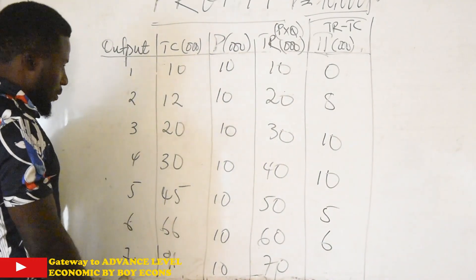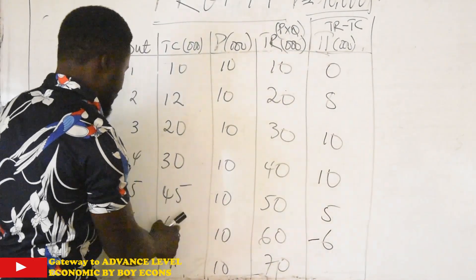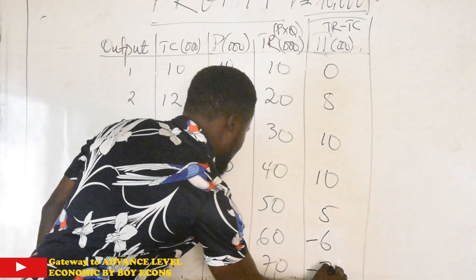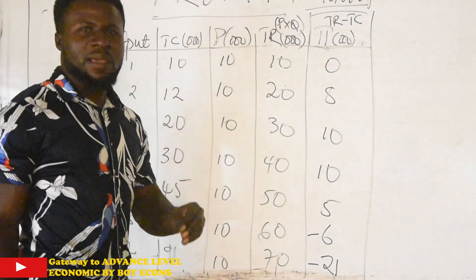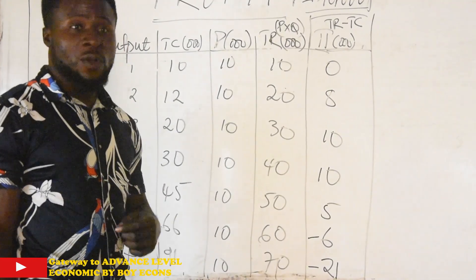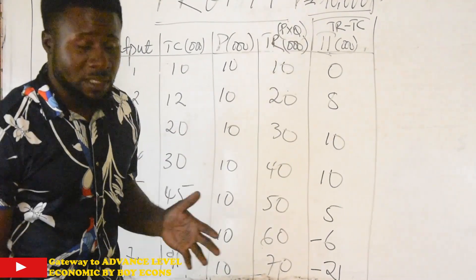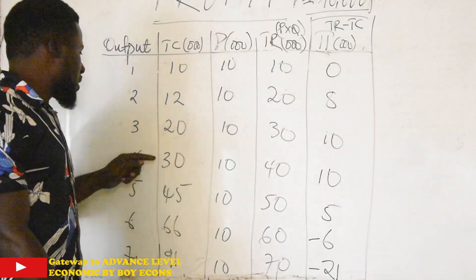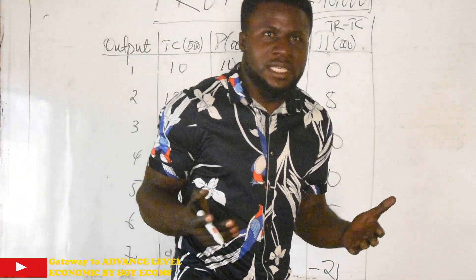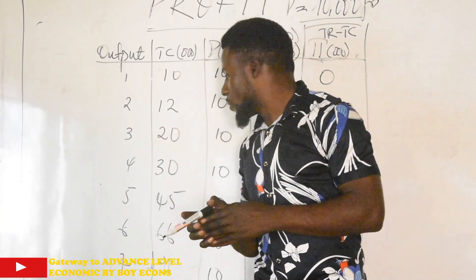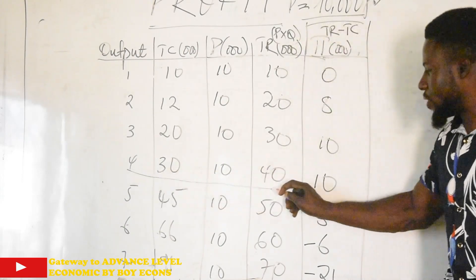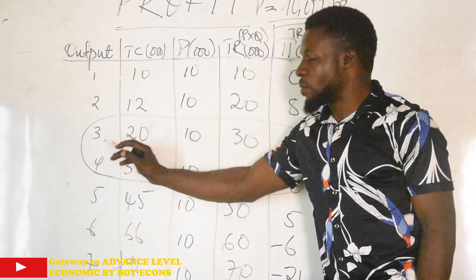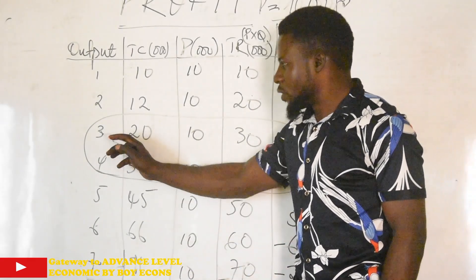The profit-maximizing output level is the output that corresponds to the maximum amount of profit. The highest profit here is 10, and we have 10 at two output levels — at output 3 and output 4. So the question is: do we say the profit-maximizing output level is both 3 and 4? No, we cannot say that. We need to choose one — but how do we choose between the third and the fourth?